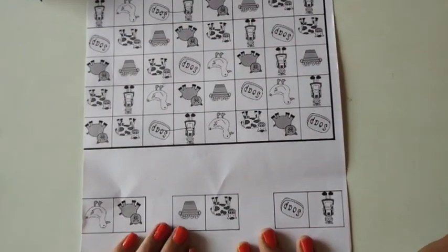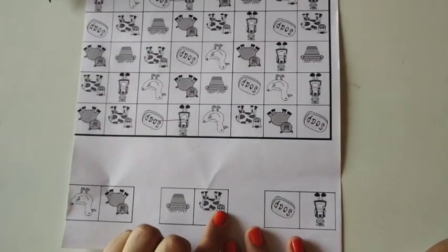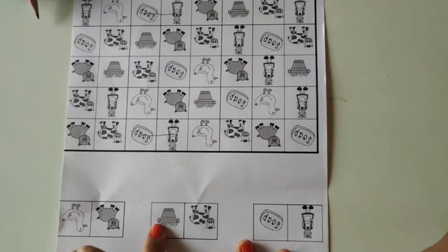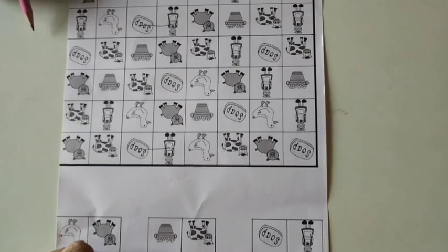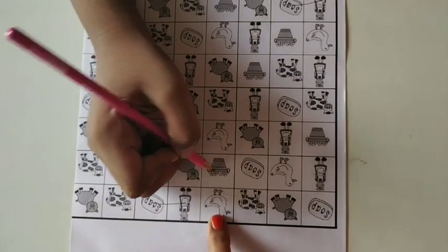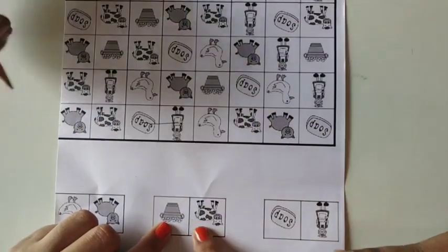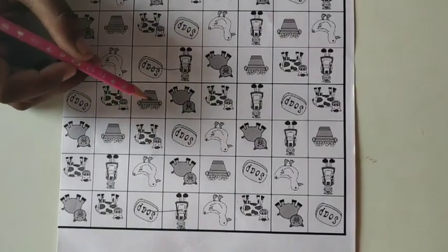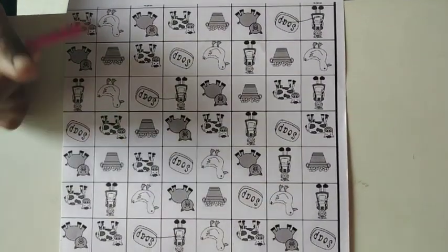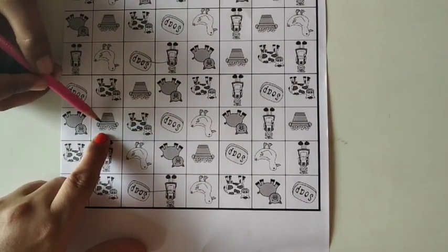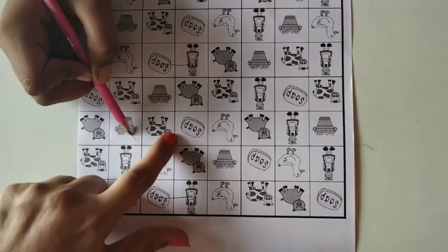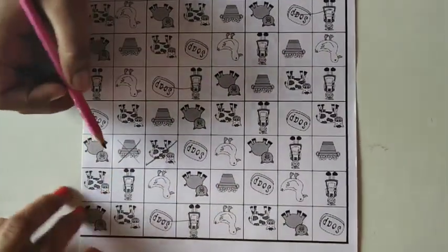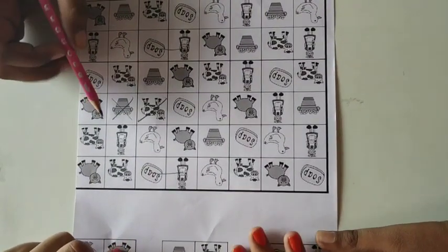Next one, we cross the next one. Okay, cow and its food. Where is the cow and its food? See, where is the cow and its food? Cow and its food, cow and its food.